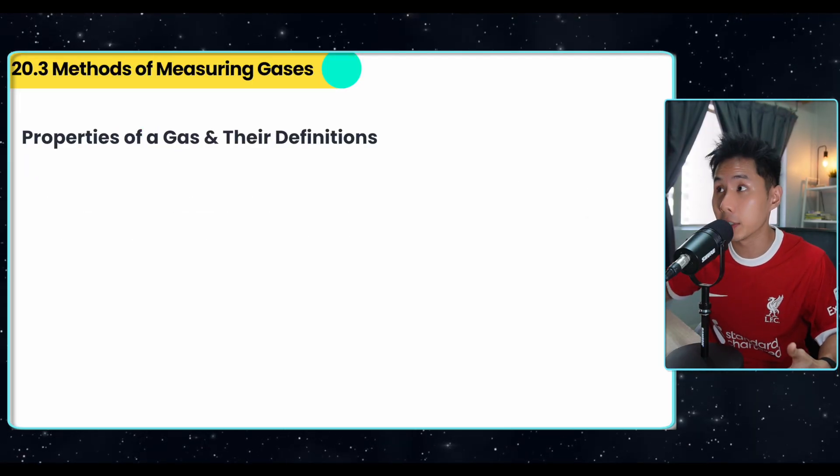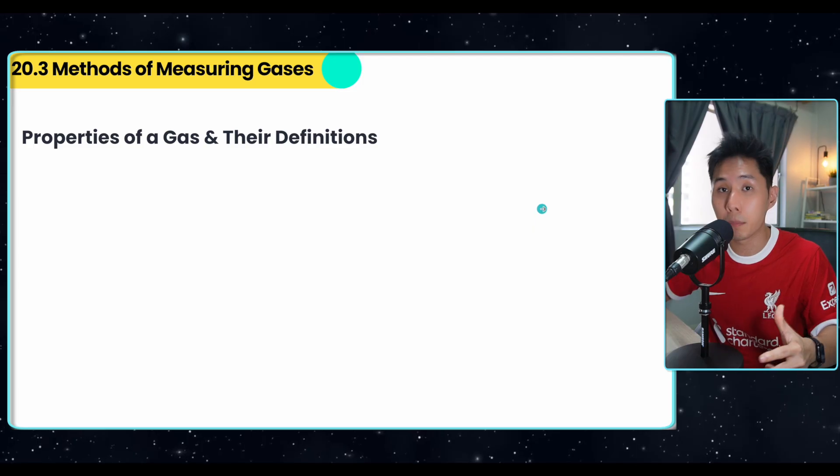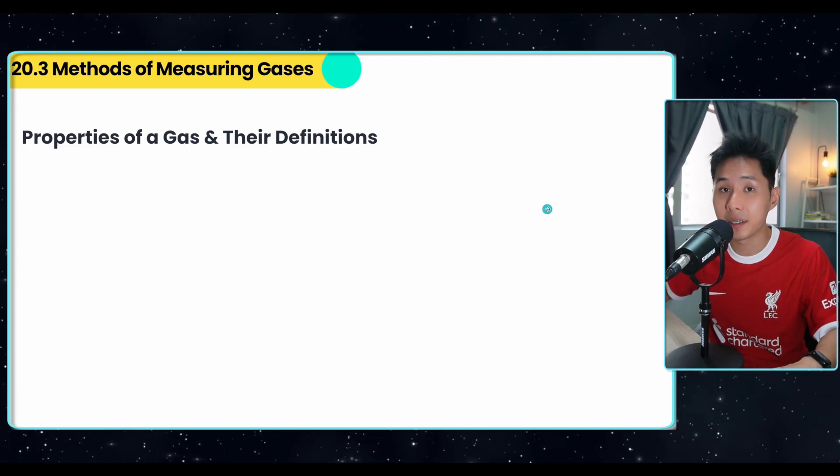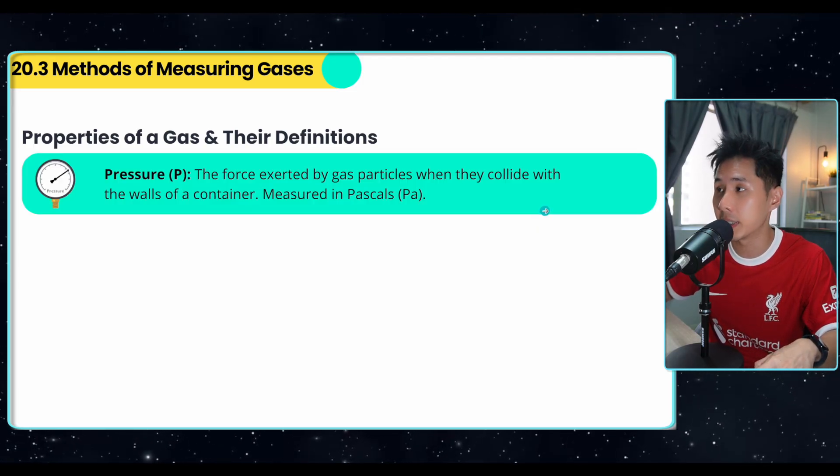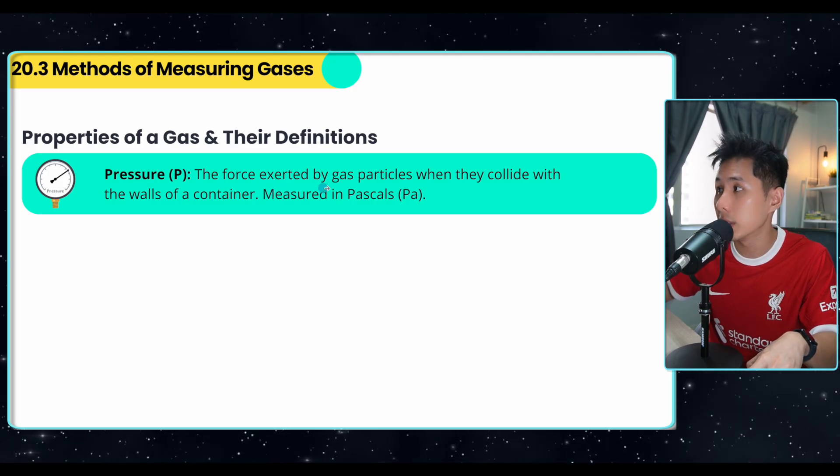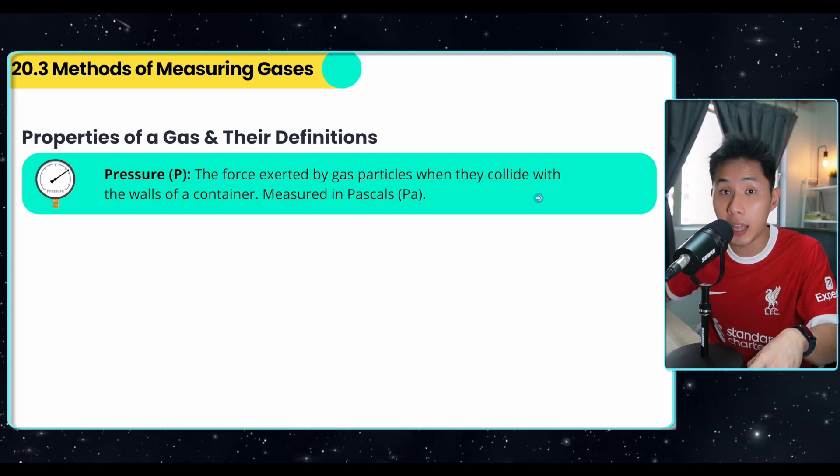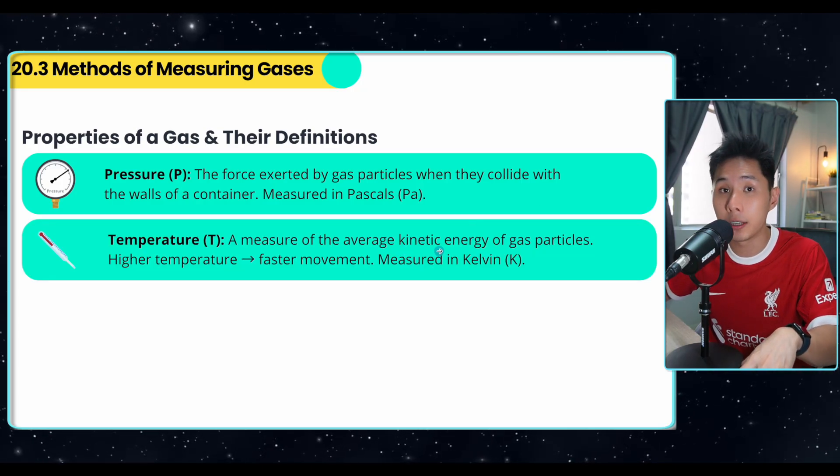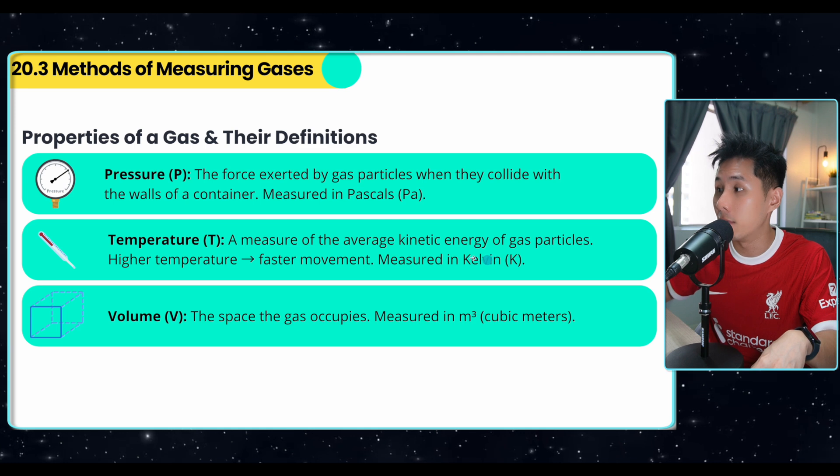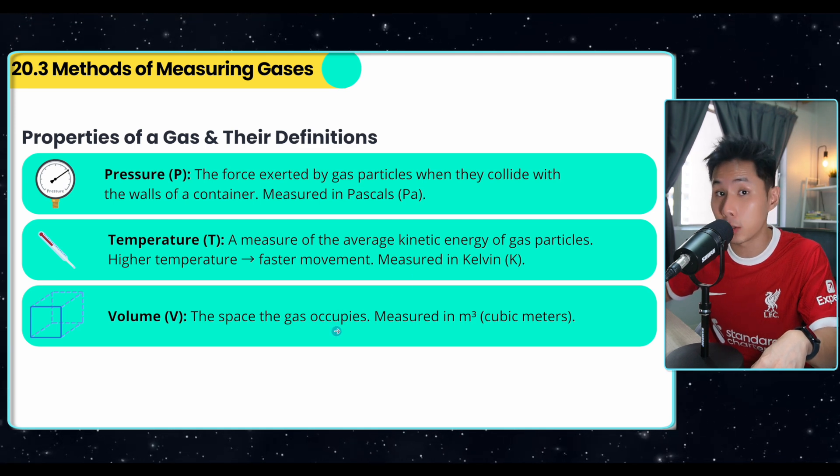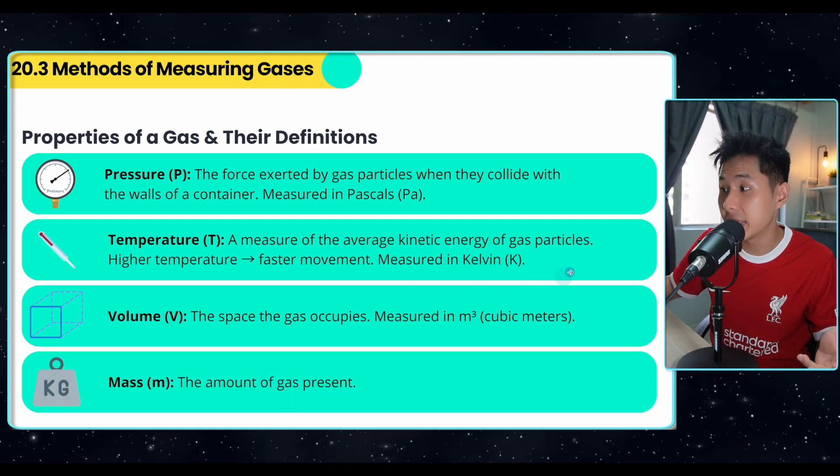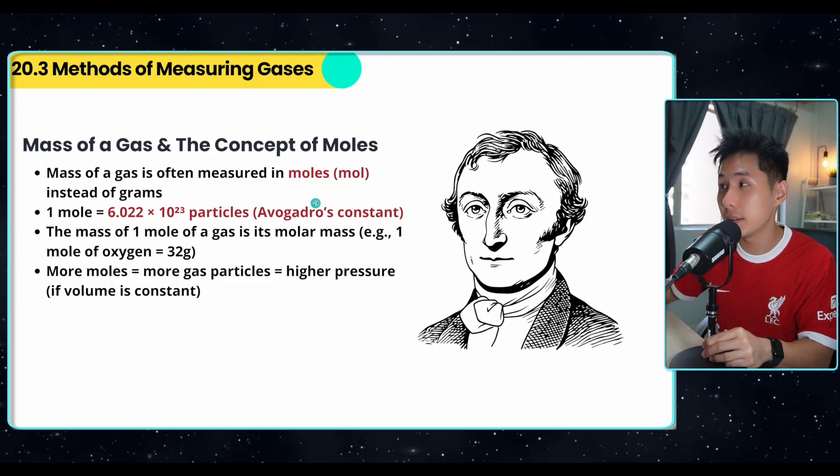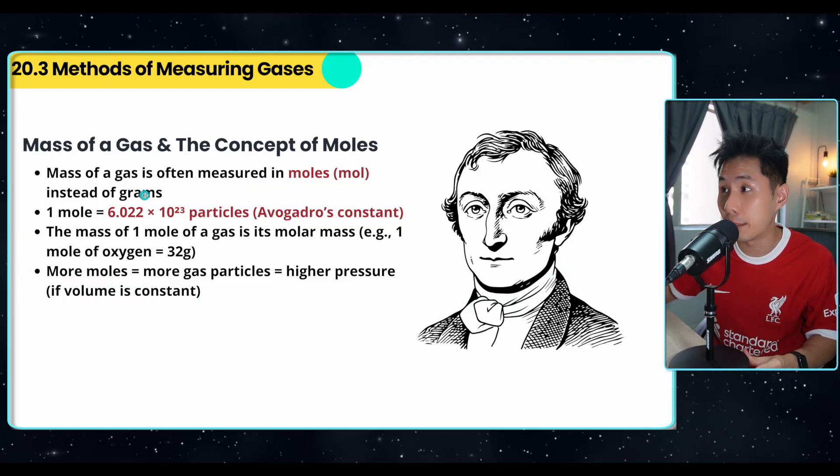Before we go into Boyle's law and Charles law, let's look into some properties of a gas so that we can understand how this law affect these properties. First is pressure. Force exerted by gas particle when they collide with the wall of the container. Temperature, what is the average kinetic energy of these gas particles? And volume, the space that the gas occupies. And the fourth quantity is mass, which is the amount of gas present, which is often measured in moles instead of grams.